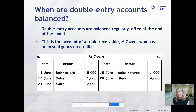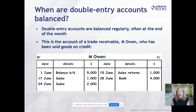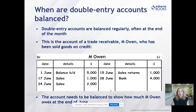On the credit side, on the 15th of June, M. Owen returned some goods - sales returns credited out of M. Owen's account, with the corresponding debit into the sales returns account. The sales entries are debited to M. Owen to increase the amount owed, and credited to the sales account. On the 28th of June, there's a bank transaction of £4,000 - M. Owen paid the business £4,000, debited to the bank account and credited to M. Owen's account to reduce the amount owed. We now need to balance the account to show how much M. Owen owes at the end of June.